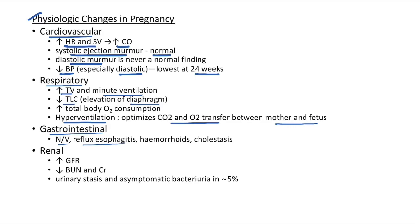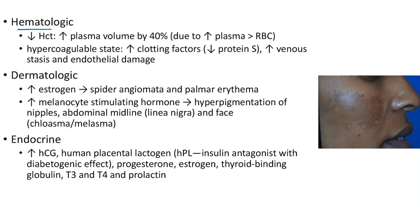Other GI changes include reflux esophagitis, hemorrhoids, and cholestasis. Renal changes include increase in glomerular filtration rate, decrease in blood urea nitrogen and creatinine, urinary stasis, and asymptomatic bacteriuria in around 5% of pregnancies. Hematological changes include decreased hematocrit because plasma volume increases by 40%, more than the increase in RBC volume. Pregnancy is a hypercoagulable state with increase in clotting factors, decrease in protein S, increase in venous stasis, and endothelial damage.